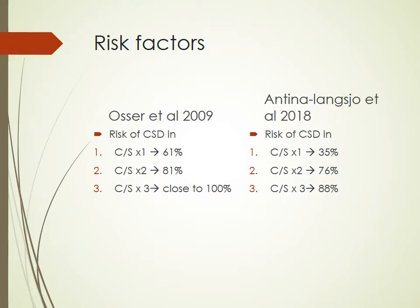The most common risk factor is that of a previous caesarean section. Two meta-analyses have looked at this. The first, Osa et al. in 2009, found previous caesarean times one associated with 61% chances of a niche, caesarean times two with 81% chances, and caesarean times three with up to close to 100%. The second, Antina Lungenswa et al. in 2018, reported caesarean times one as 35%, times two as 67%, and times three as 88%.